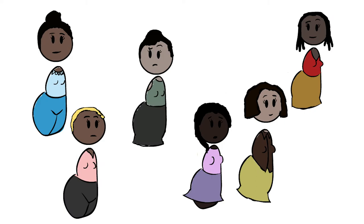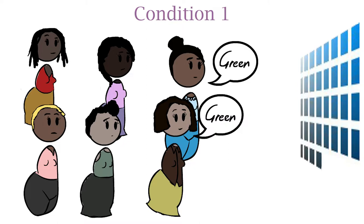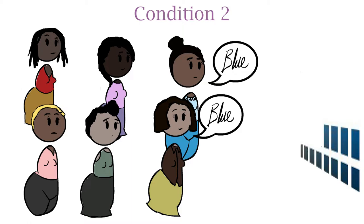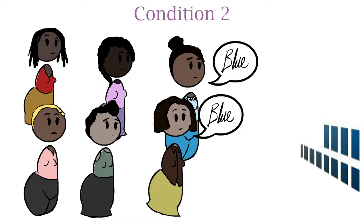Two of the participants were confederates working alongside the researcher. In one condition, the confederates identified all 36 slides as green, thus displaying minority consistency. And in another condition, they had identified 24 of the slides as green and the remaining 12 as blue, thus displaying minority inconsistency.